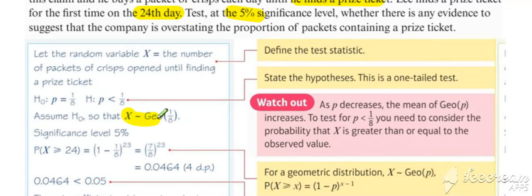So we set up our geometric with our probability of one-eighth. We set up our null hypothesis of p is equal to one-eighth.